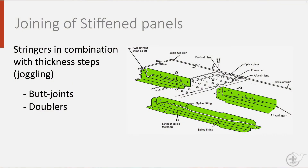With the presence of both stringers and frames, we have to face the issue that they intersect. Also, loads are not constant throughout the fuselage, which means that the thickness of the fuselage panels will vary, as will the stringers. As the outside of the fuselage has to remain even and smooth for aerodynamic reasons, the thickness steps are dealt with on the inside. This is often done by adding extra layers of thickness using doublers, which are riveted or bonded to the structure. The stringers attached to the skin will also have to follow that thickness step — they are then joggled, as shown in the figure.